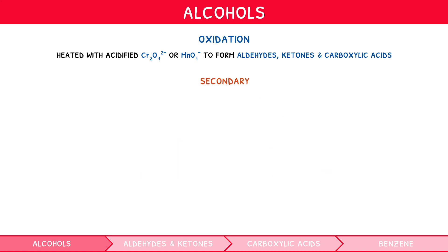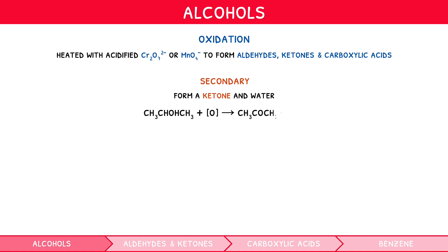Secondary alcohols undergo oxidation when heated with acidified potassium dichromate to form a ketone plus water. For example, the equations for the oxidation of propan-2-ol to form propan-2-one are shown.